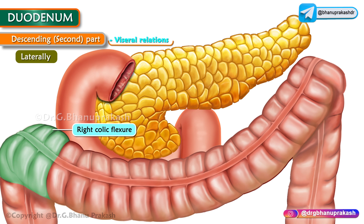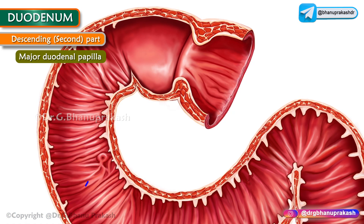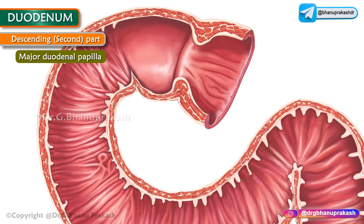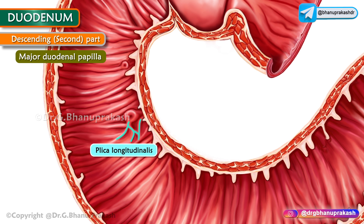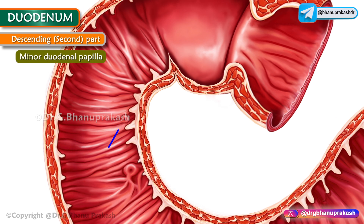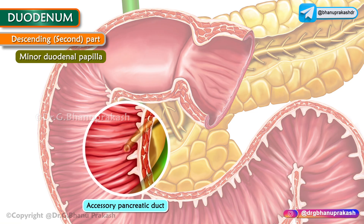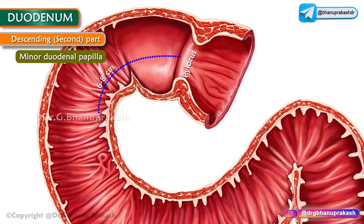The interior of the second part contains the major duodenal papilla — an elevation 8 to 10 centimeters distal to the pylorus where the hepatopancreatic ampulla opens. A longitudinal fold called the plica longitudinalis is present below the major duodenal papilla. The minor duodenal papilla is located above the major duodenal papilla, 6 to 8 centimeters distal to the pylorus, and is the opening for the accessory pancreatic duct.